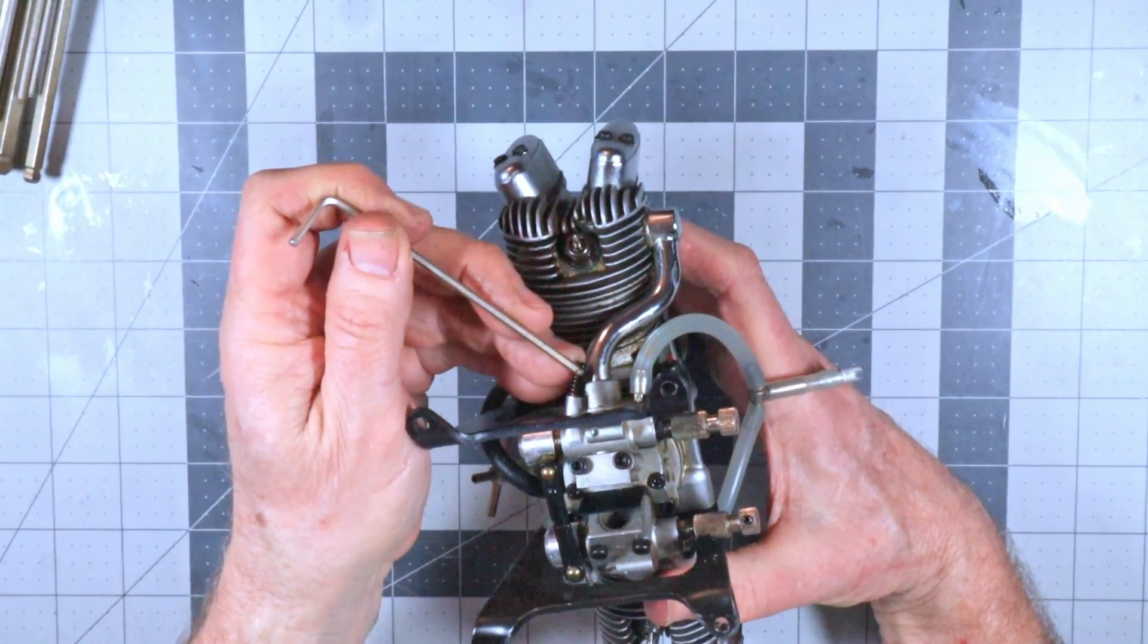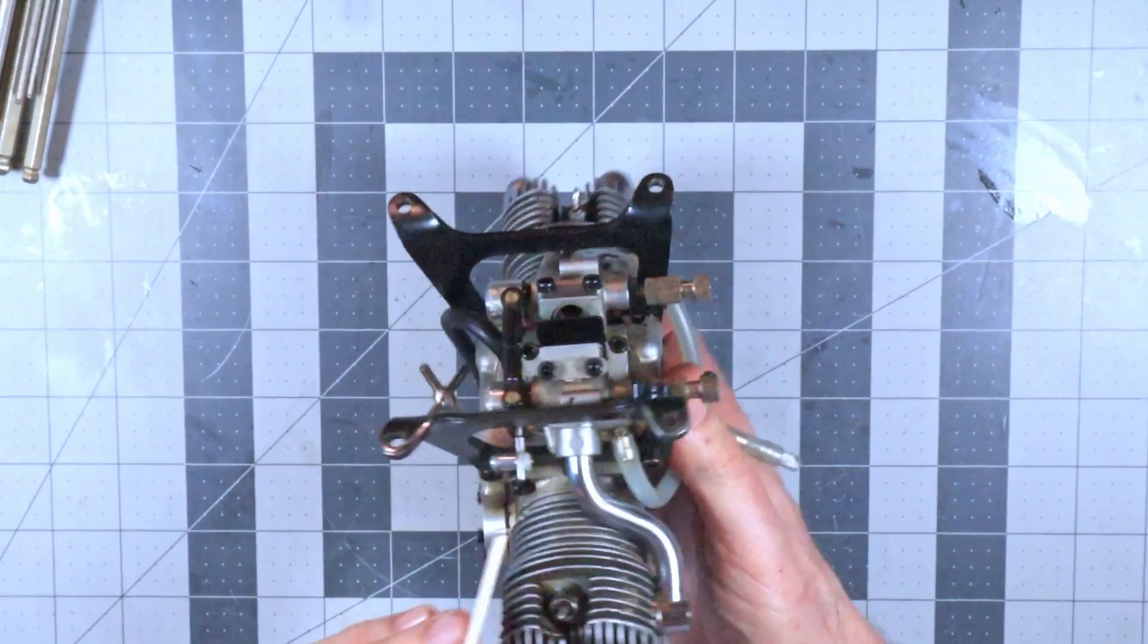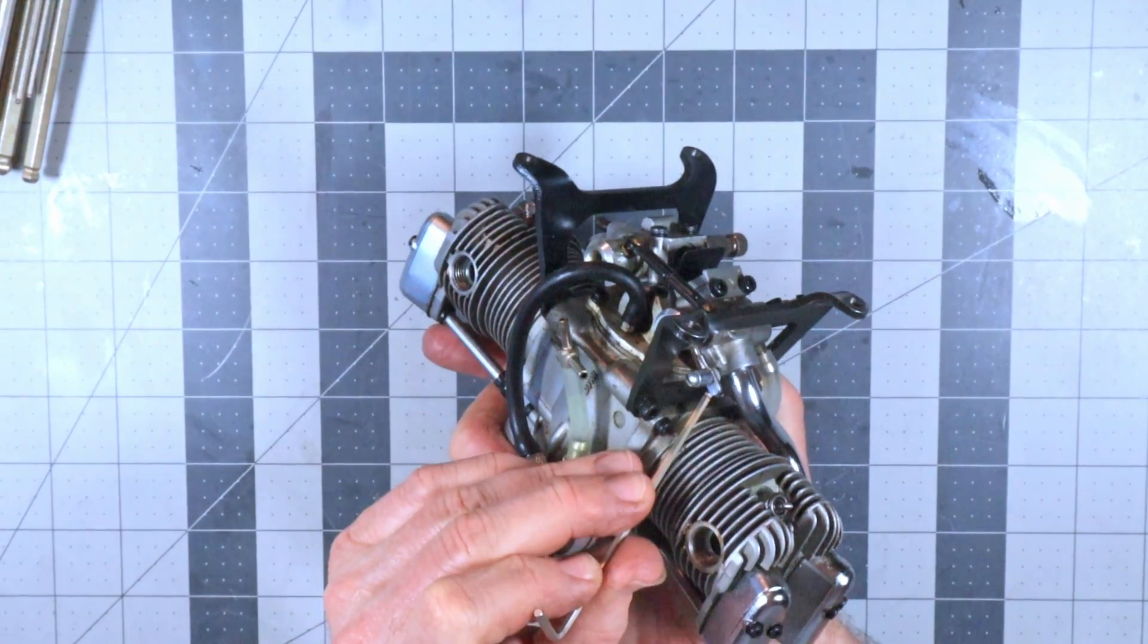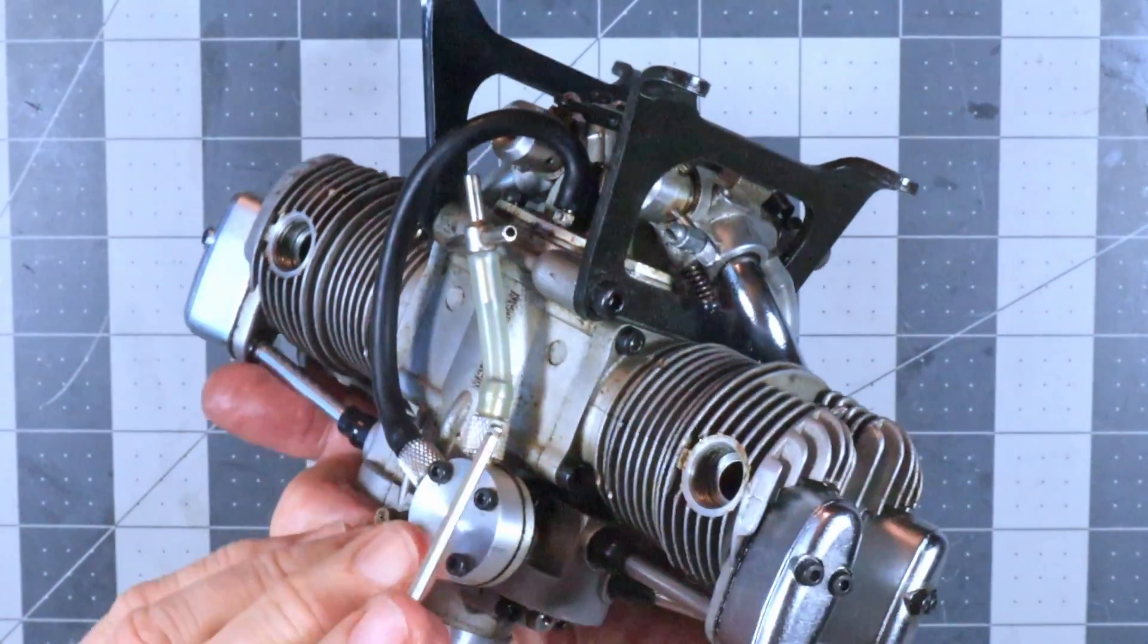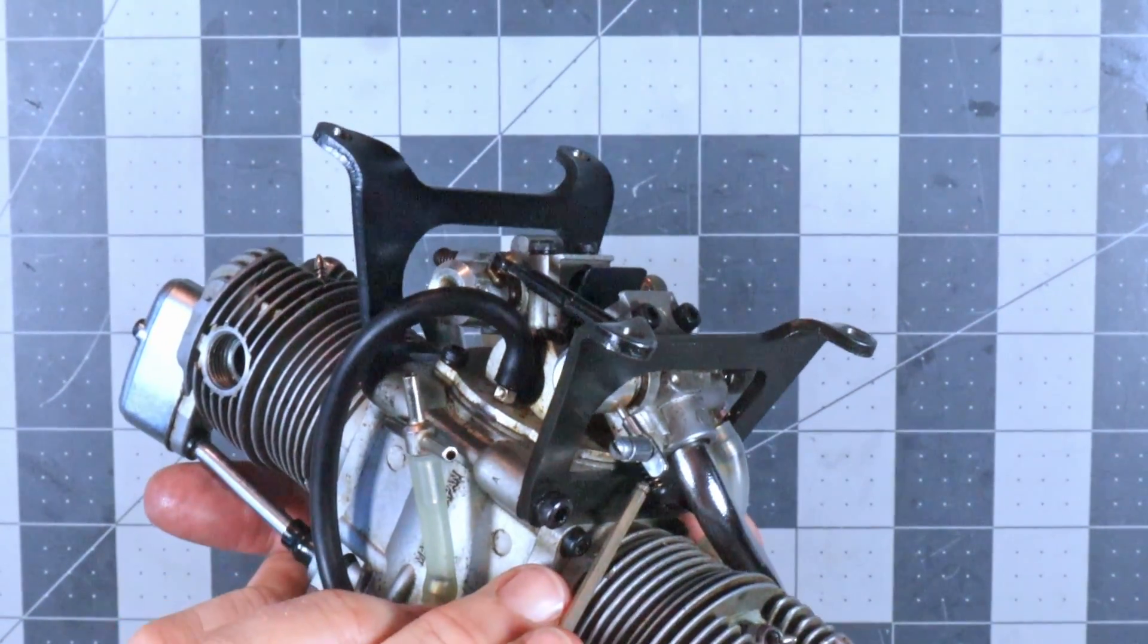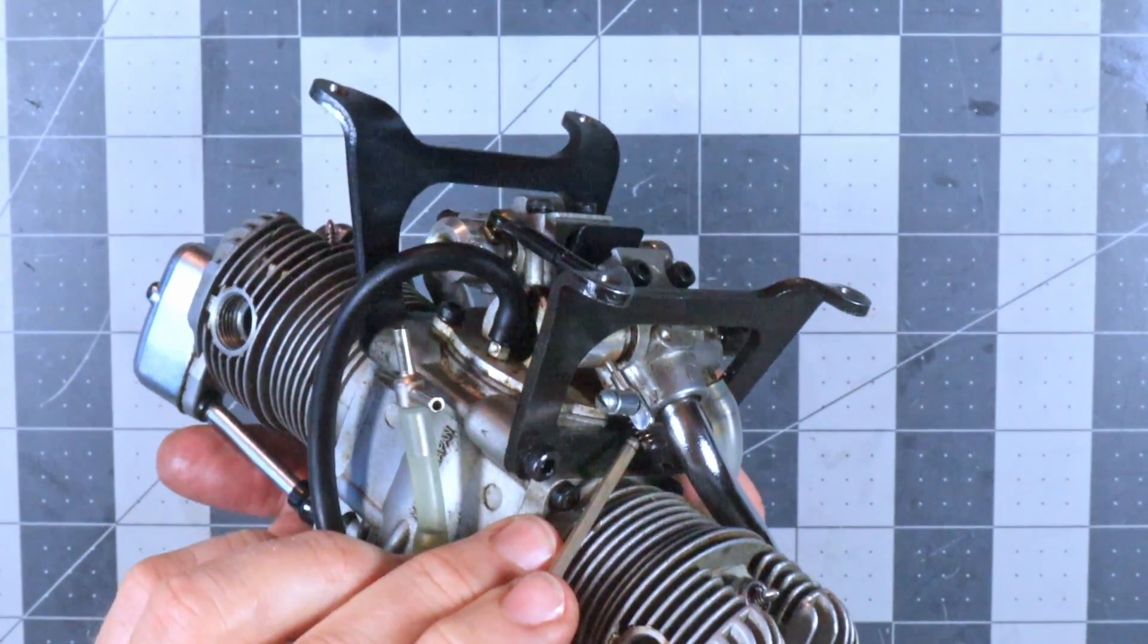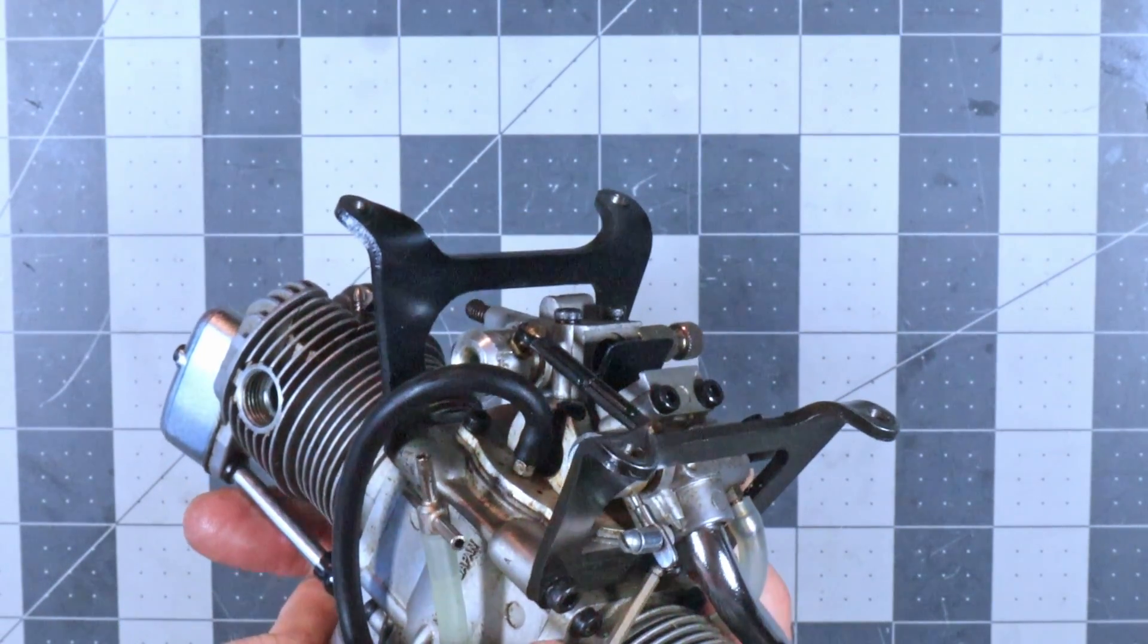So each carb has a throttle stop screw, and this one is really hard, it's almost impossible to get to. Let me see if I can zoom in on this and really show you. This throttle stop screw is here, and it's impossible to get anything on there to adjust it.